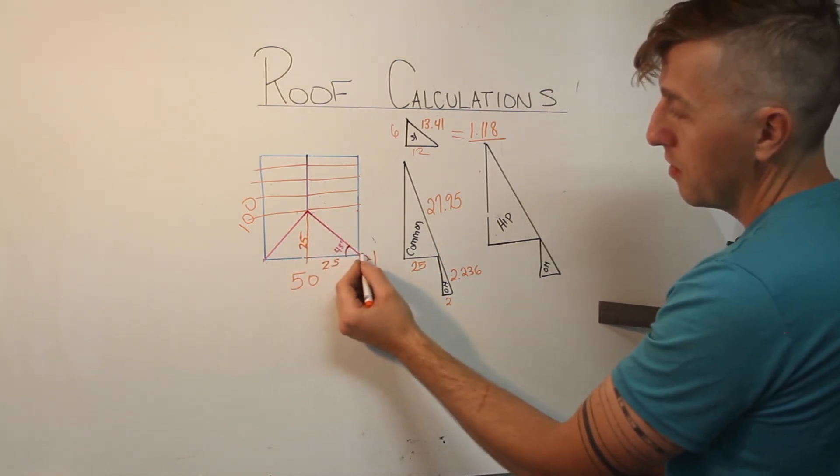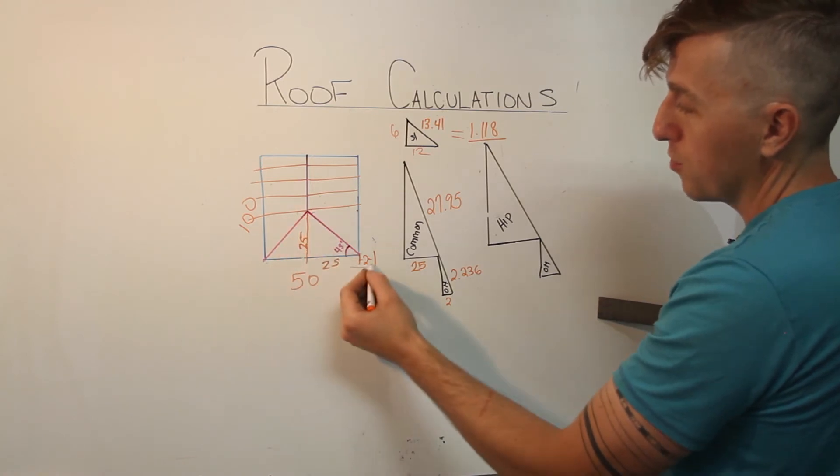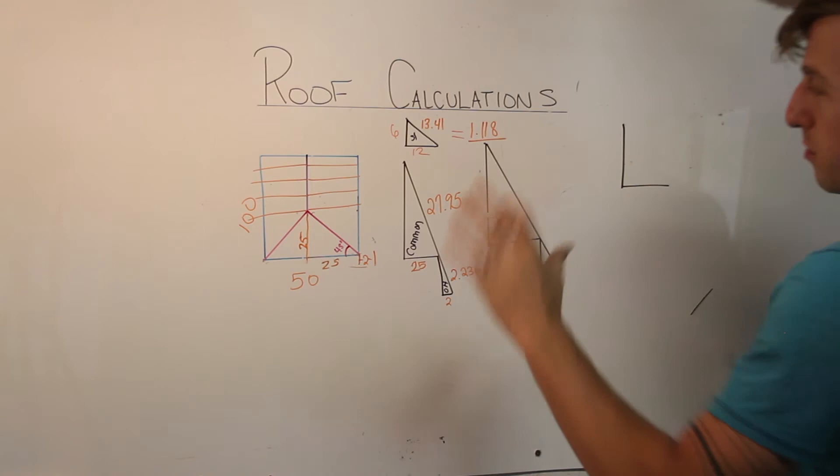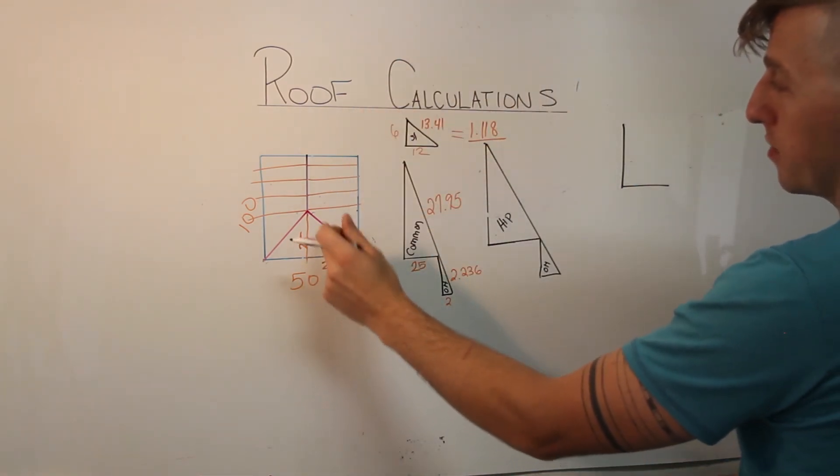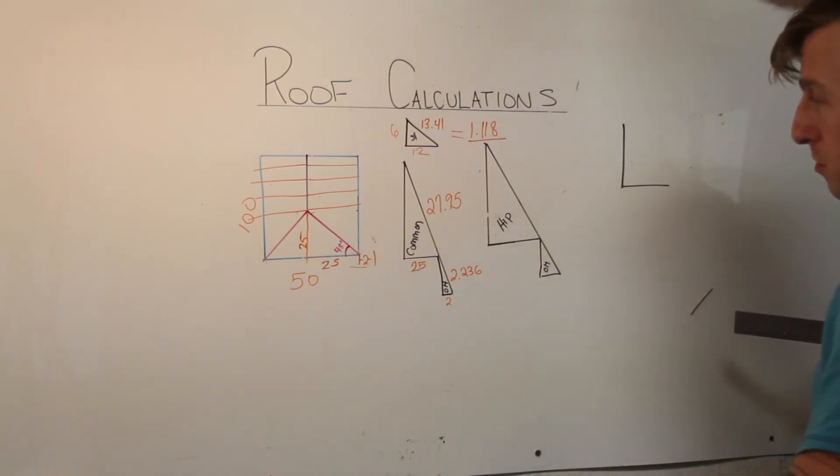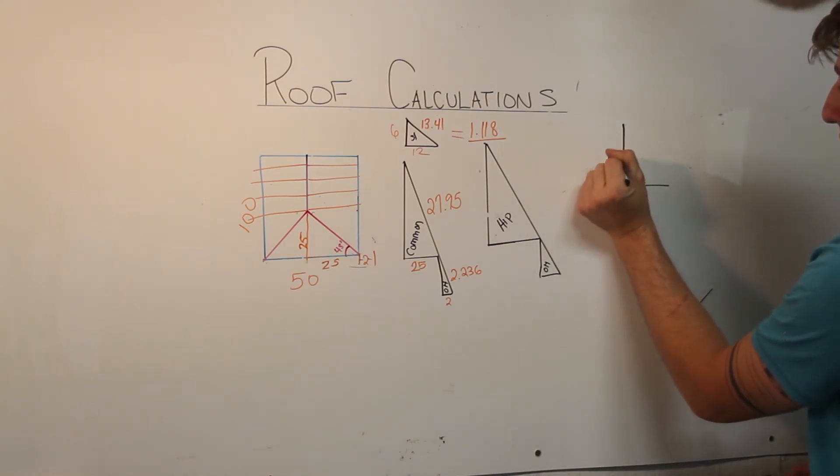But all of a sudden, we have a right angle triangle here. So we come out here, and we say we're still bird's eye view. So it's 25 and 25, because we want to figure out what this dimension is on the flat, on the two-dimensional plane. So we have 25 here. We have 25 here.